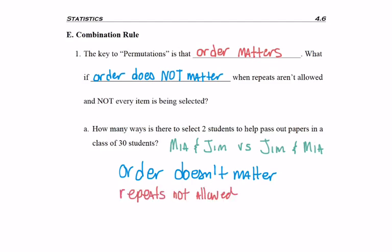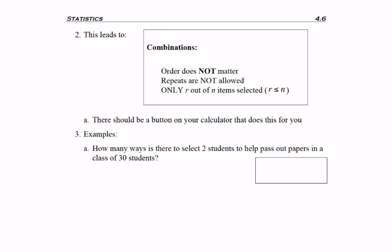Keep in mind, repeats are not allowed — you can't pick Jim and then pick him again to be the second person if they're passing them out together. And not all items are selected because we're just taking two students. This leads to combinations, which is different from permutations, although it looks a little similar. The formula is n factorial over the quantity n minus r factorial times r factorial in the denominator. We have this extra piece multiplied to the denominator, making the denominator larger, which makes the final answer smaller. The key here is that order does not matter.